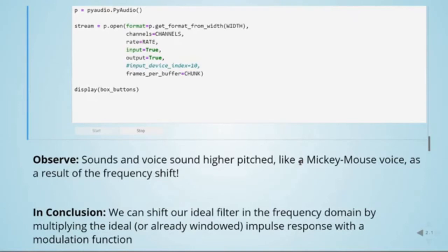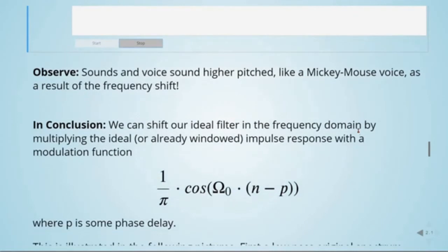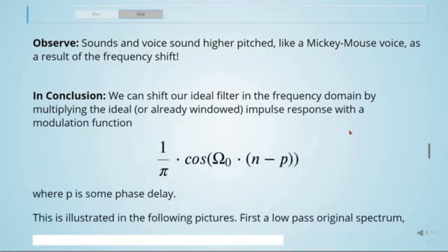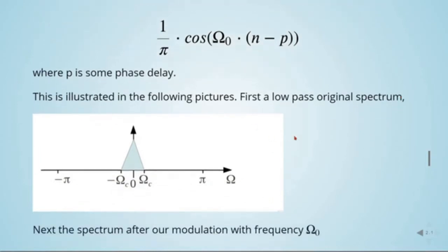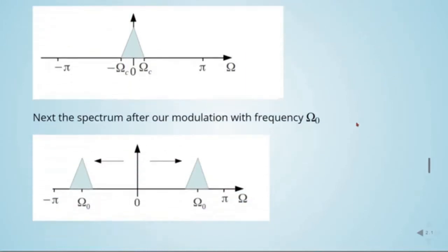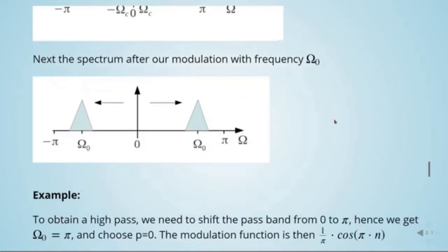After running the modulation demo live, we hear the voice sound higher in pitch — something like a Mickey Mouse voice. This is the result of the frequency shift. The conclusion is that we can shift our ideal filter in the frequency domain by multiplying the ideal or already-windowed impulse response with a modulation function of the form cosine(omega_0 * n + p), where p can be some phase delay. This is illustrated by the picture showing the original low-pass spectrum and, after modulation with omega_0, copies of the spectrum centered at the modulation frequency.